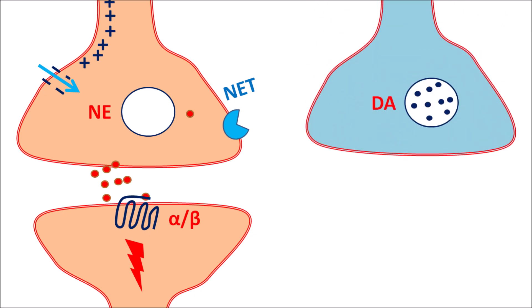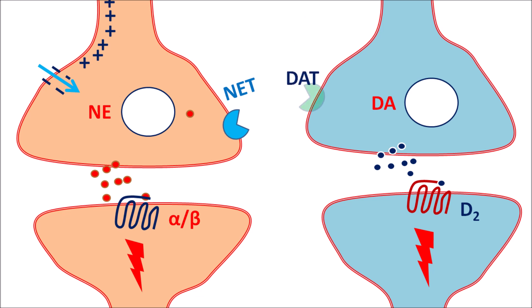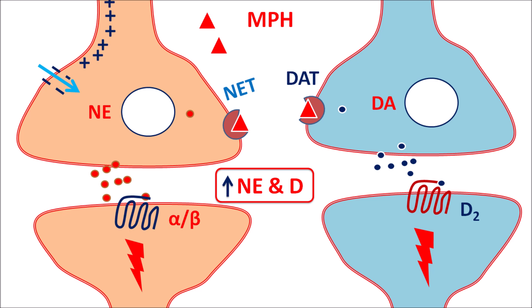Similarly, another neurotransmitter within the CNS is dopamine. These are the presynaptic dopaminergic neurons, and on the postsynaptic neurons, dopamine receptors such as D2 receptors are located. By exocytosis, dopamine is released and acts on postsynaptic receptors. Just like norepinephrine, dopamine can be taken back into the nerve terminal by dopamine transporters, controlling dopaminergic transmission within the CNS. Methylphenidate acts on both the norepinephrine transporter and dopamine transporter, inhibiting their activity, resulting in increased levels of norepinephrine and dopamine within the synaptic cleft, thereby increasing neurotransmission.